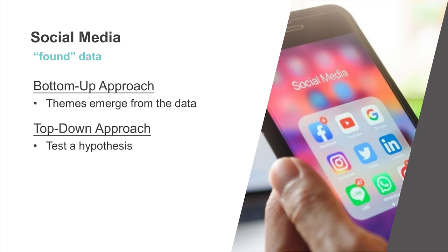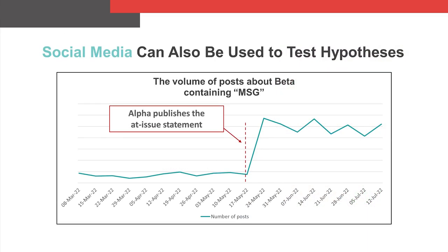This may involve the testing of hypotheses by looking at the volume or characteristics of the data over time. It may also be possible to identify ahead of time an a priori content of interest. Here's a top-down social media conclusion that supports the hypothesis that Beta's been harmed. Here we see that the volume of posts about Beta containing the word MSG increased markedly in the wake of Alpha's ad issue statement. We also see that following Alpha's statement, the volume of posts connecting MSG to Beta remained elevated for months.